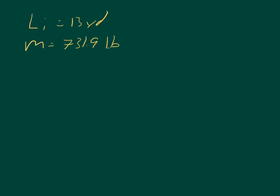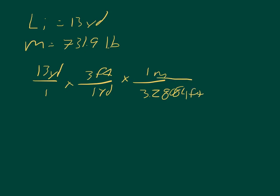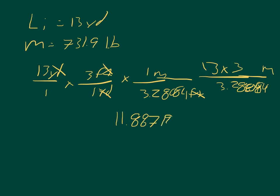So in order to convert the length, we'll start out with 13 yards over 1. We'll multiply that by 3 feet per 1 yard, and we'll multiply that by 1 meter per 3.28084 feet. And that will give us units of meters, so the feet will cancel out, the yards will cancel out, and we'll get 13 times 3 over 3.28084. That's 11.88719962 meters.